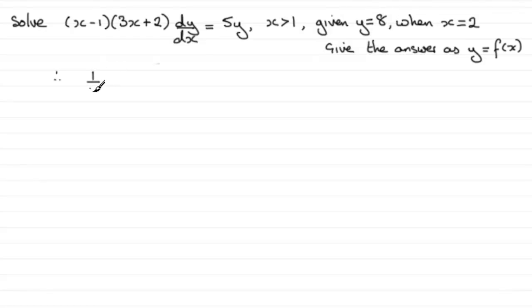So you should find you get (1/y)dy = 5/[(x-1)(3x+2)]dx. And what we need to do is integrate both sides. So you can see I've now separated the variables - I've got all the y's on one side and all the x's on the other side.